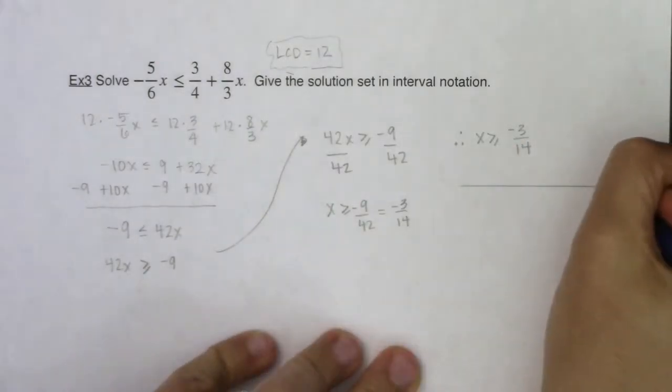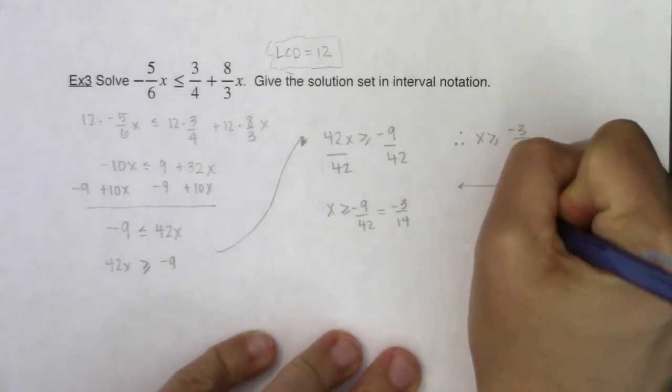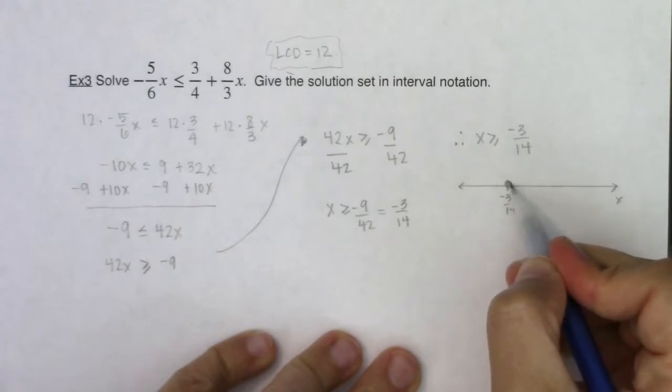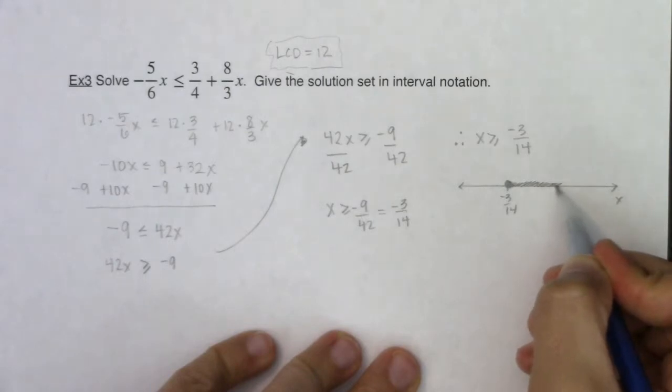So if I had my x-axis and I was at negative 3 fourteenths, I will put a closed dot because of the greater than or equal to, specifically the equals to is what I want to include, and I would shade to the right.